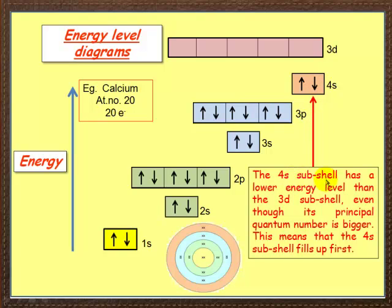The 4s subshell has a lower energy level than the 3d subshell. The 3d subshell has got a higher energy level. Another golden rule: you fill the lower energy levels first. So these get filled first, then we'll go up there. So 4s subshell has a lower energy level than the 3d subshell, even though its principal number is bigger. This means that 4s subshell fills up first, as we can see there. Again, if you don't understand it, pause it, have a think. I'm sure you can do it.